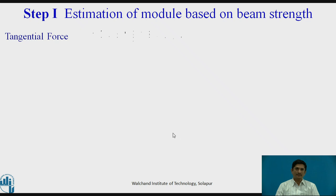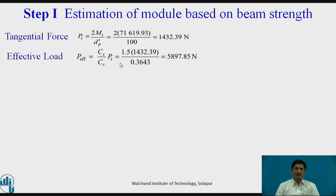Let us see. The tangential force PT equals 2MT upon DP dash. We have the tangential force. Effective load is given as CSPT upon CV. Both the things are available. From equation C and D, P effective into FS equals SB. Or we can get the module by this equation. M equals 3.86.